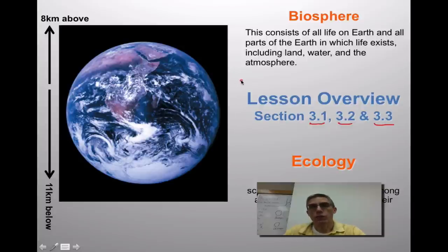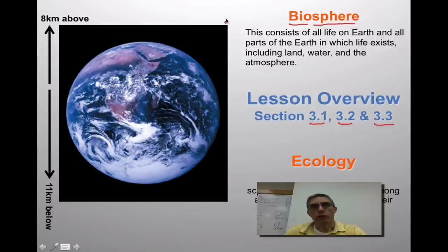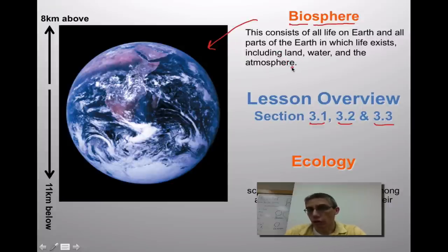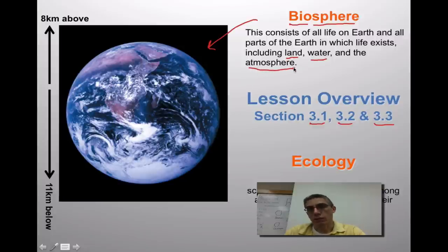The first thing we need to do is talk about something called the biosphere. If you notice, we have the prefix bio, which means life, and the word sphere hopefully implies that we are talking about our planet. The biosphere consists of all life on Earth and all parts of the Earth in which life exists, and this includes the land, the water, and the atmosphere — you're going to find life in all three of these areas.